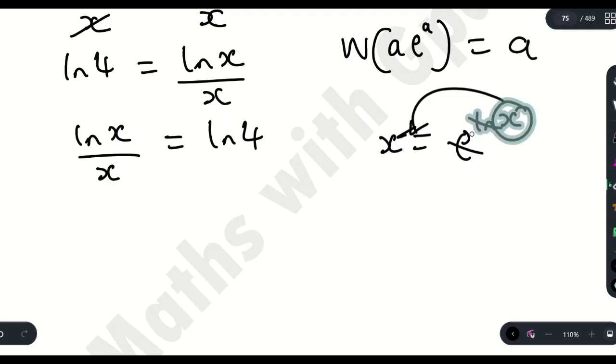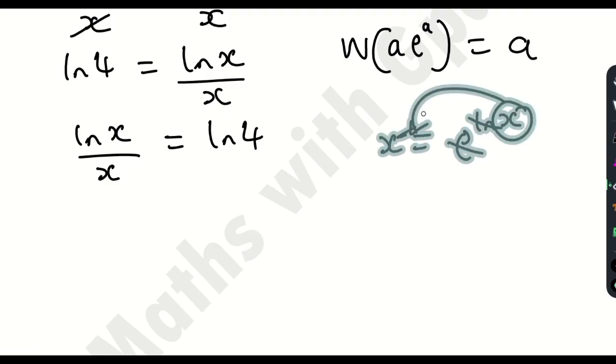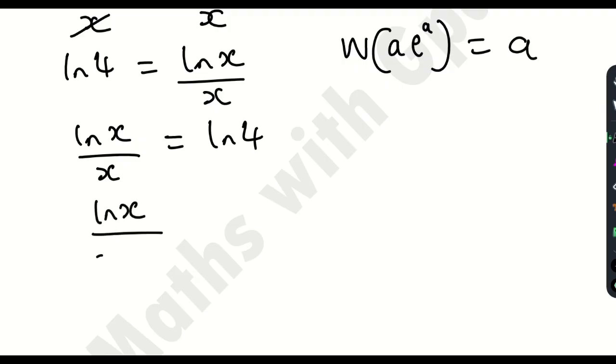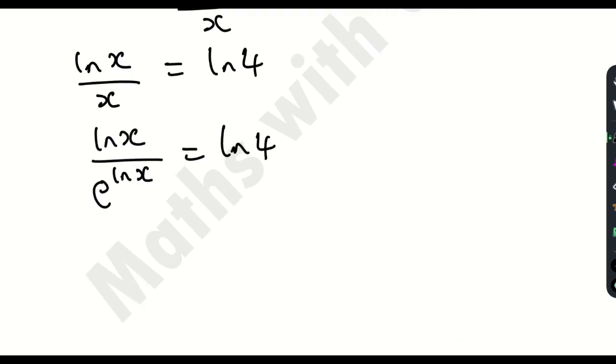So that's what I'm going to do now because I am trying at my possible best to make sure I bring in e into the equation so I can correctly apply the Lambert W function. So watch what's going to happen. I'm going to have ln x over e to the ln x, like I explained not quite long, then ln 4.